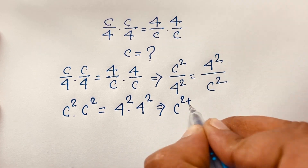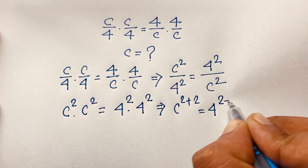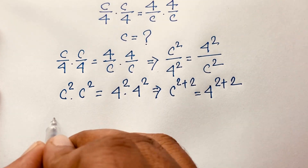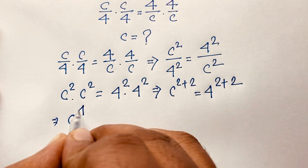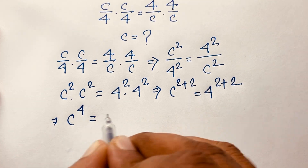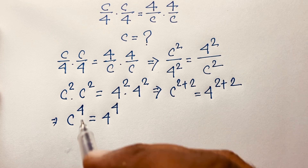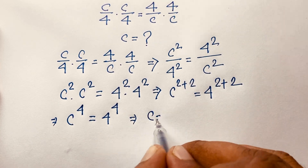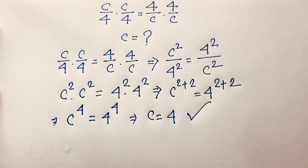According to exponential law, since the bases are the same, we add the exponents. So it will be c to the power 2 plus 2 is equal to 4 to the power 2 plus 2, which gives c to the power 4 is equal to 4 to the power 4. Since the exponents are the same, the bases must be equal, so c is equal to 4. This is one answer.